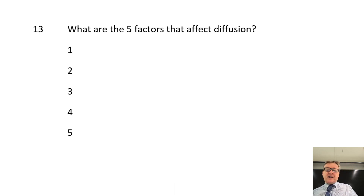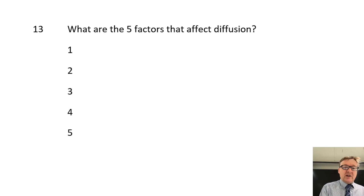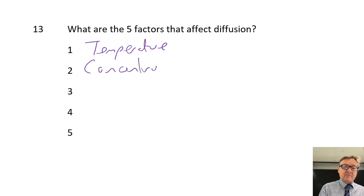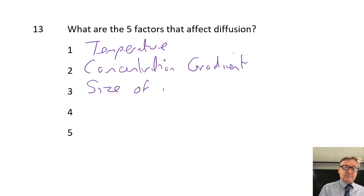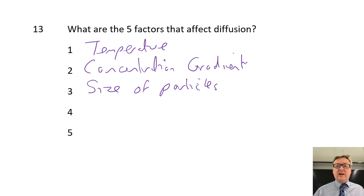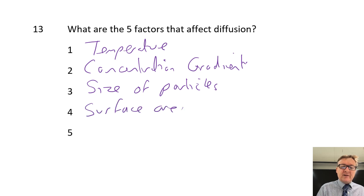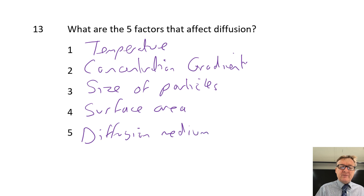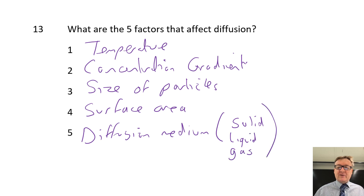Thirteen: what are the key factors that affect diffusion? Think about how perfume molecules can get around a room quicker. We've got temperature, concentration gradient, and size of the particles - those three relate to the perfume example. We've also got surface area, and we've also got the medium it's in. If it's in a solid it's slower; in a liquid it's faster; and in a gas it's fastest of all.